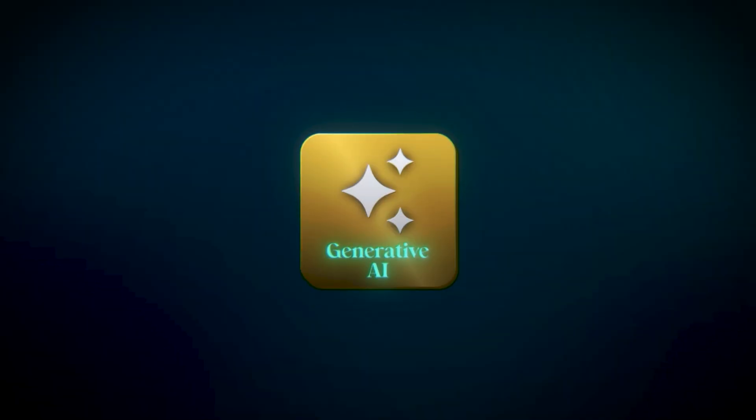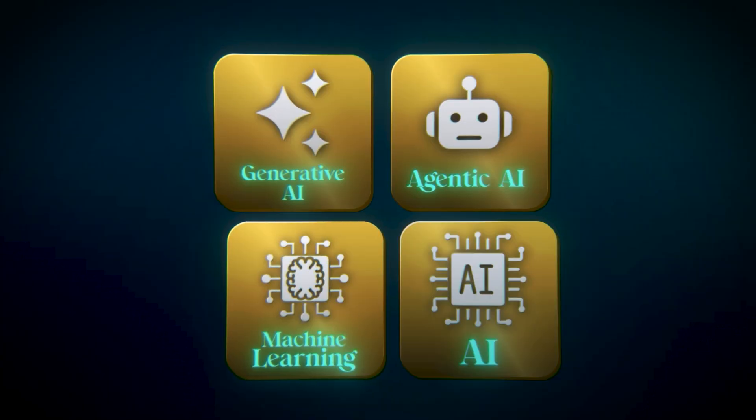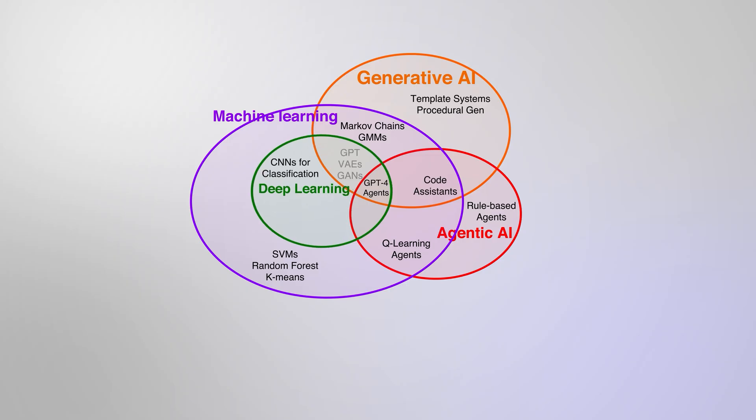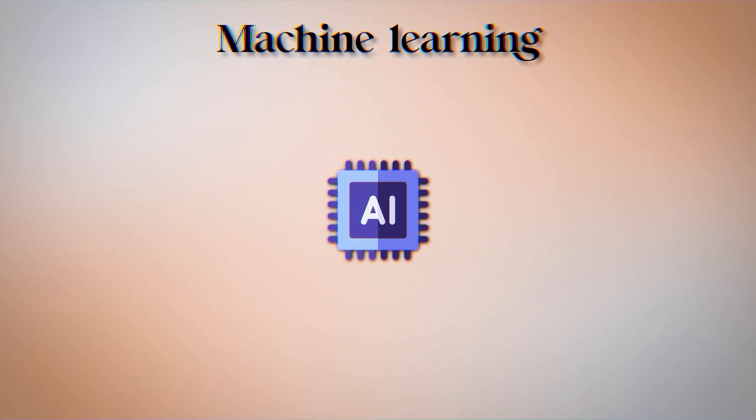Let's go over what generative AI is versus agentic AI versus machine learning versus AI versus deep learning. We need to create a chart where all of these categories — generative AI, agentic AI, machine learning, and deep learning — all fall under AI. AI is the simulated intelligence of a machine. Machine learning is when AI learns from data, so it's when the machine learns on its own.